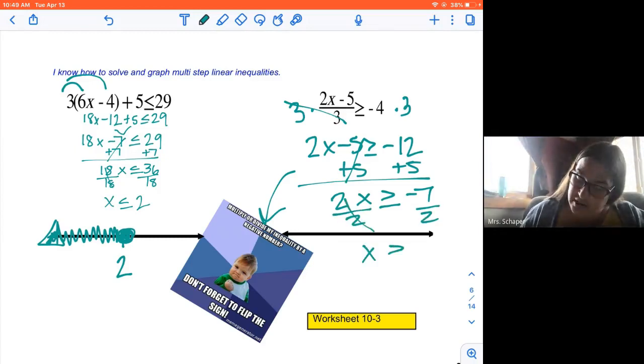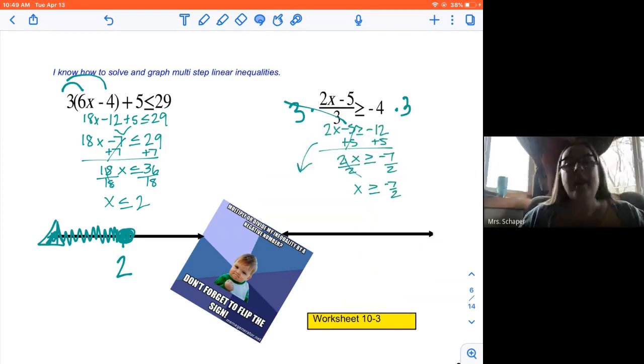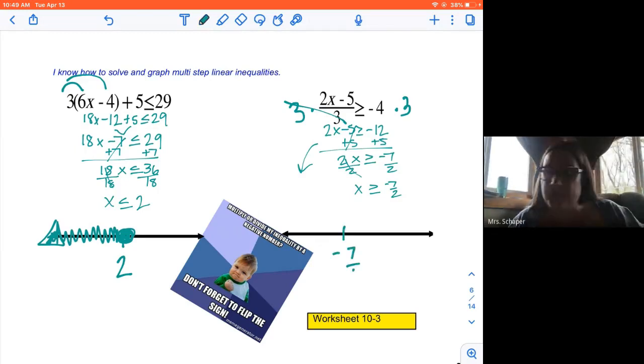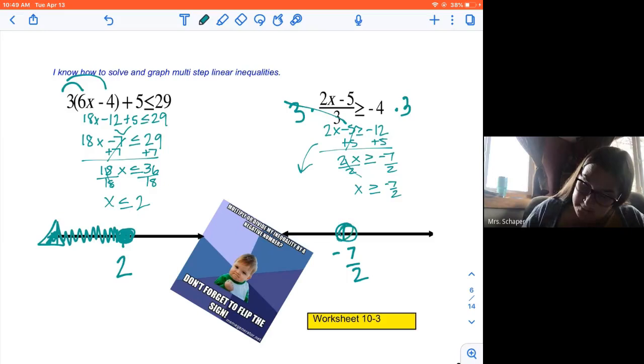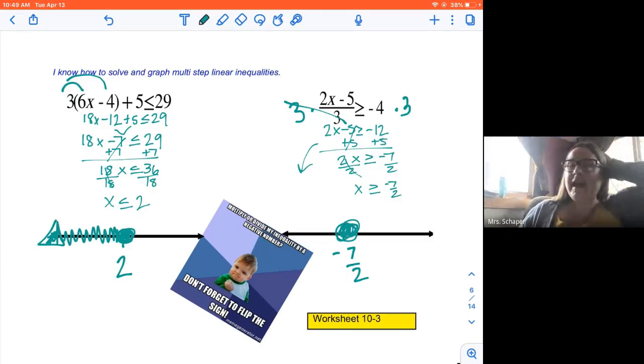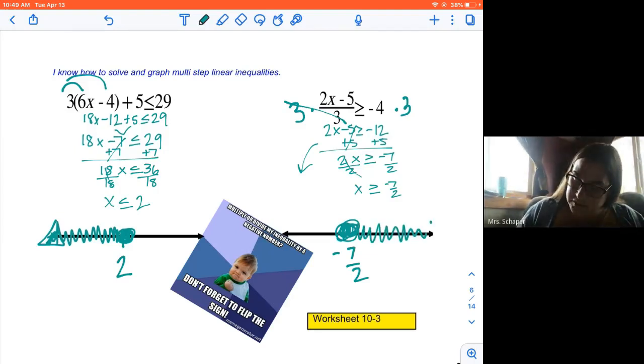So on my number line, there we go. On my number line, the number I'm going to put on there is negative 7 halves. Or you know what? If you did negative 3 and a half or negative 3.5, that's fine. It's more than or equal to, so it tells me I fill it in. And then if it's more than negative 7 halves, I'm going to shade it and it goes to the right. So there you go.